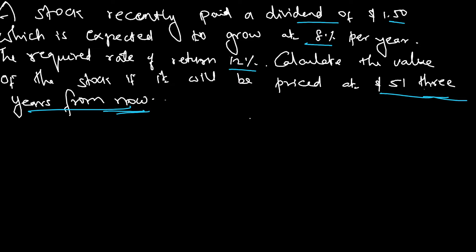This is multiple year growth dividend discount model. Three years from now. So, 0, 1, I mean this is 1, 2 and then 3.